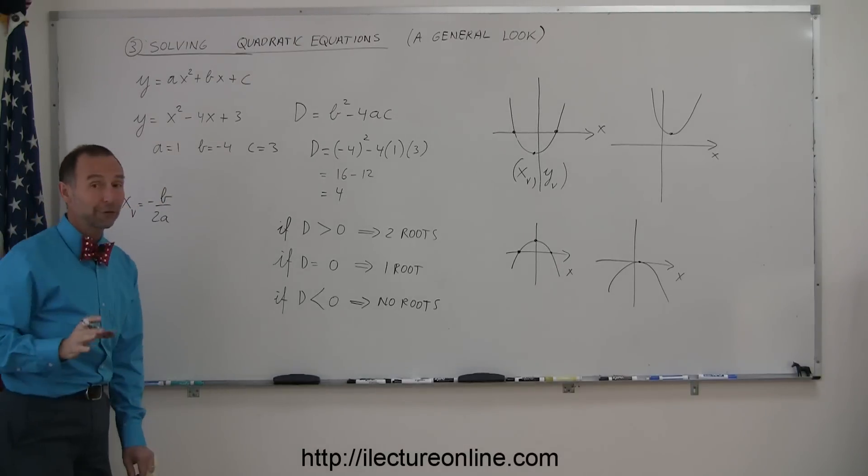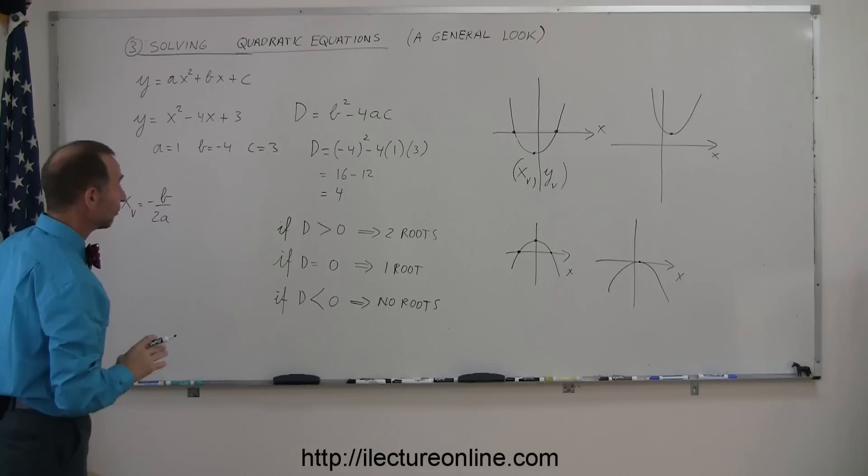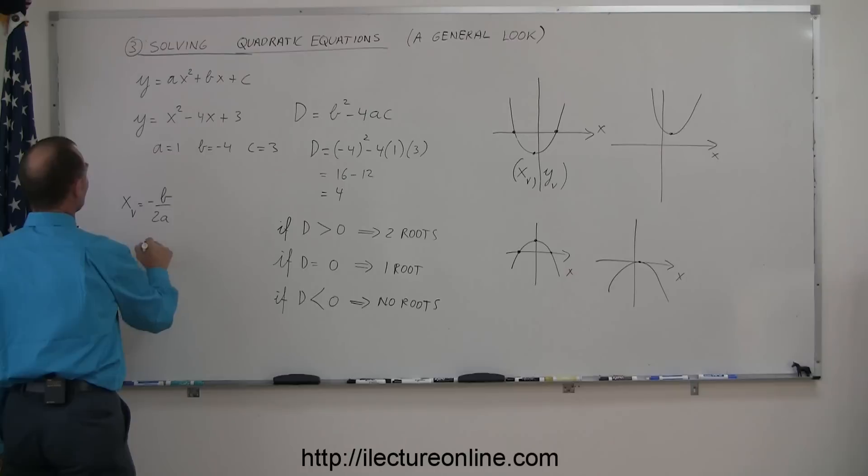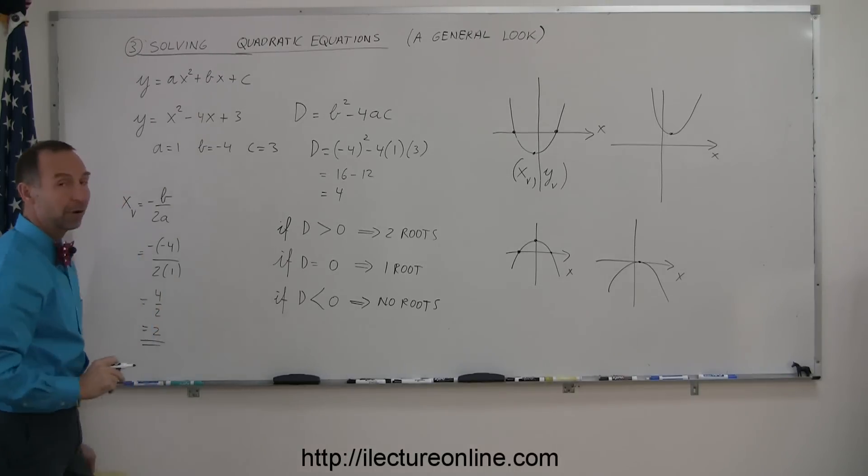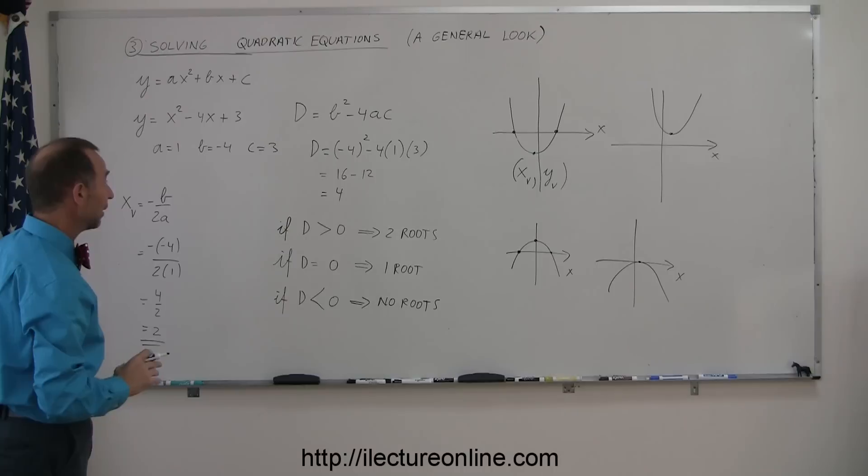So again, by using the coefficients of the three terms, I can figure out where that particular point is and where the vertex is of the parabola. So since b is a negative 4, I take a negative times a negative 4 divided by 2 times a, since a here is 1, that means minus times a minus or plus, that's 4 over 2 or 2. The x-coordinate of my parabola is 2.